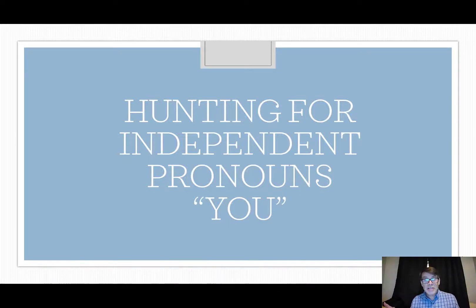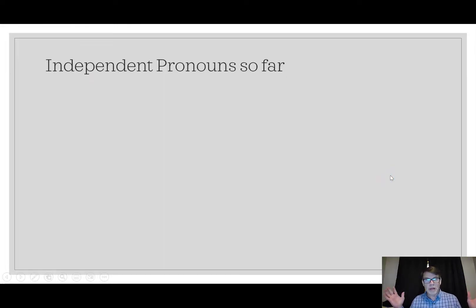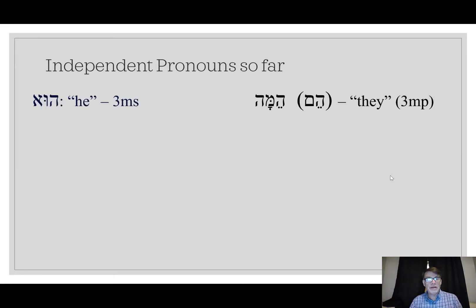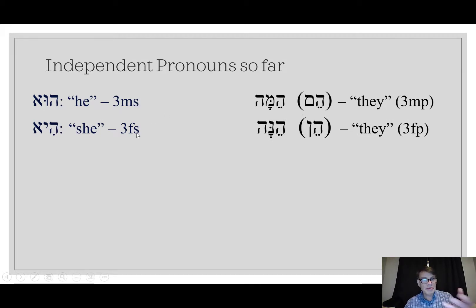All right, this video and the next, and we will have learned all of the Hebrew independent pronouns. Let's start by reviewing the independent pronouns we've had so far. We've learned that hu is he, and that hi is she. These are the third masculine singular and third feminine singular pronouns, he and she.